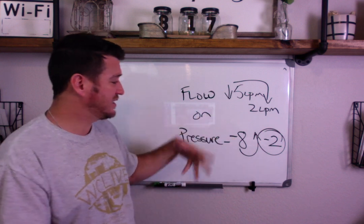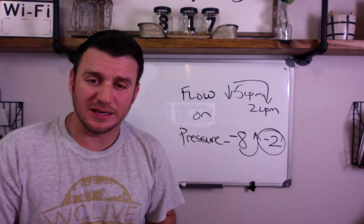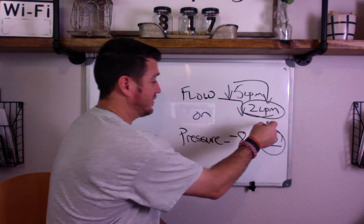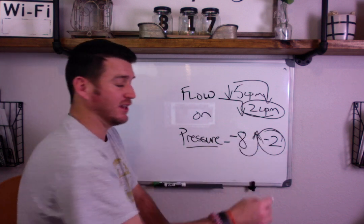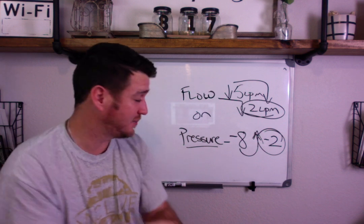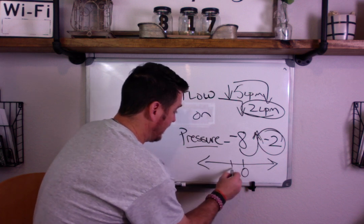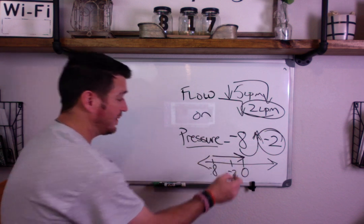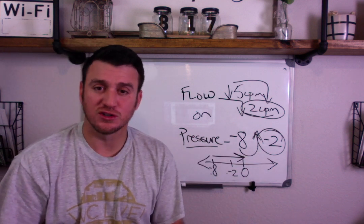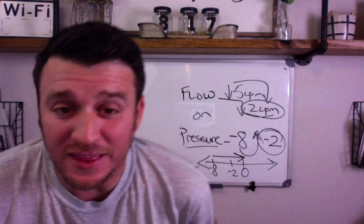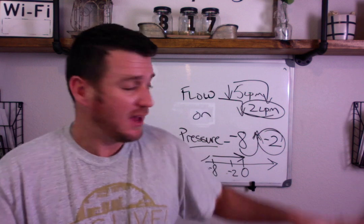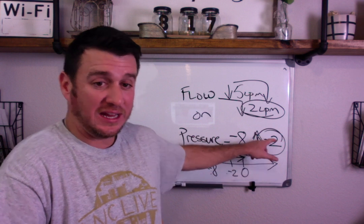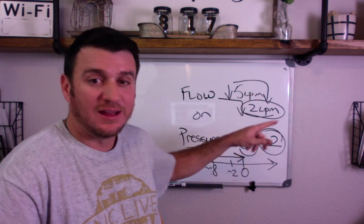If you're getting caught up on increase versus decrease: for flow trigger, decrease the number to make it more sensitive. For pressure trigger, increase the number to make it more sensitive — and this is because on the pressure number line, going from negative eight to negative two means increasing your value. At the end of the day, a lower flow trigger sensitivity and a higher pressure sensitivity — where negative two is higher than negative eight — and you're going to be okay.